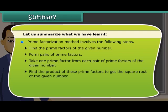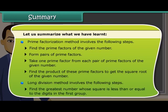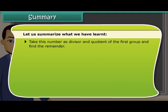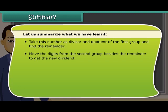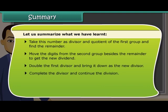Long division method involves the following steps: find the greatest number whose square is less than or equal to the digits in the first group. Take this number as divisor and quotient of the first group and find the remainder. Move the digits from the second group besides the remainder to get the new dividend. Double the first divisor and bring it down as the new divisor. Complete the divisor and continue the division.